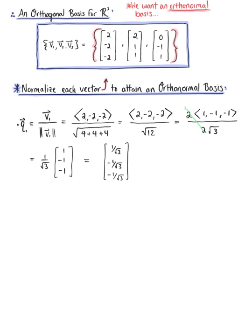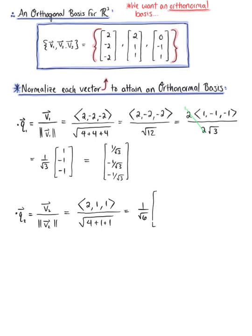Now we do the same for vector v₂, letting this be vector q₂ and normalizing v₂ as v₂ divided by the length of v₂. Vector v₂ is (2, 1, 1), divided by the magnitude, which is the square root of 4 + 1 + 1. This can't be simplified, so we rewrite the scalar multiple as 1/√6 times (2, 1, 1), leaving us with the vector (2/√6, 1/√6, 1/√6).